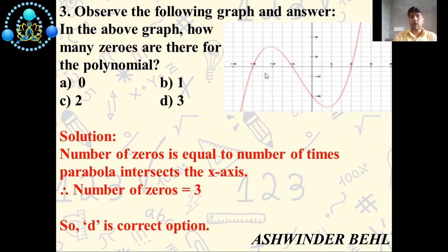If you see the graph, the x-axis intersects one, two, and three times. So number of zeros are 3. So correct answer is D.